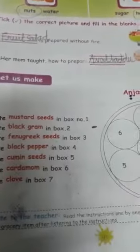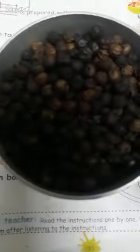Next, paste fenugreek seeds in box 3. Here, 3. Fenugreek means bendayam. Okay, see there. Here, paste it. Next, black pepper. See here, that is here, black pepper.